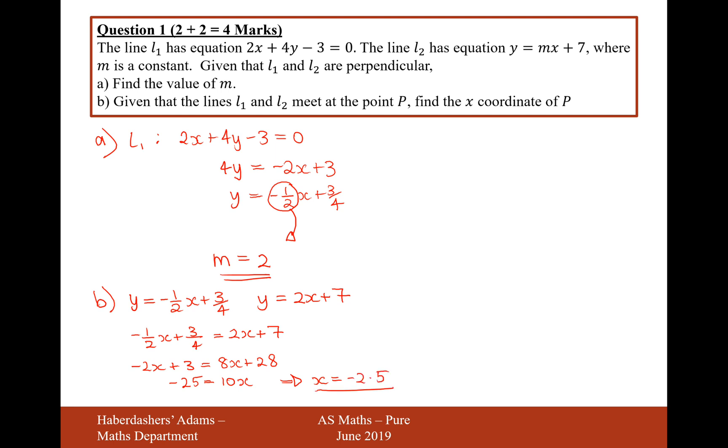And there we are. That's the answer for this question. The x-coordinate of P is minus 2.5. That's the answer for question 1, worth 4 marks. Let's move on to question 2.